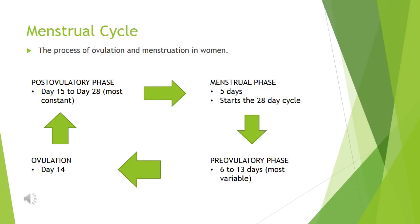Ovulation usually occurs on day 14 and involves the rupture of the follicle and the release of the secondary oocyte. In the post-ovulatory phase, the luteal phase is reached in the ovary and the uterus lining continues to thicken.